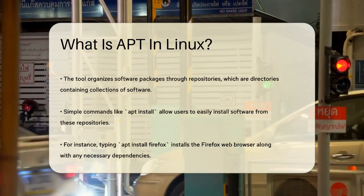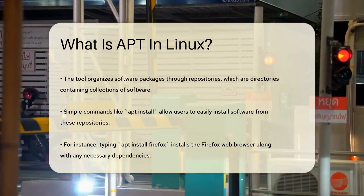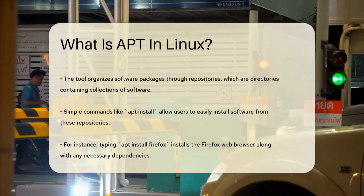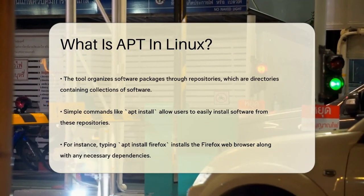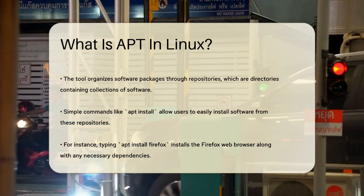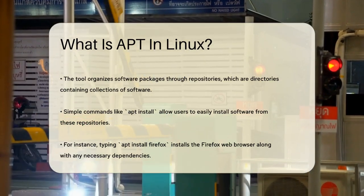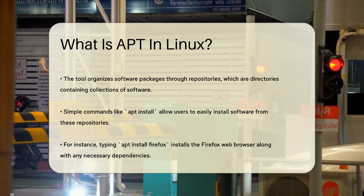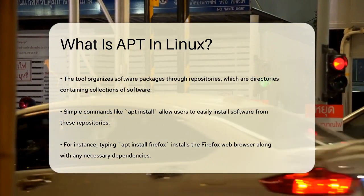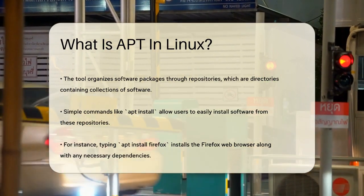It uses repositories, which are essentially directories that hold collections of software packages. When you use APT, you can install packages from these repositories using simple commands like apt install. For example, if you want to install a web browser, you can just type apt install Firefox, and APT will take care of the rest, including downloading and installing any dependencies that the browser needs.